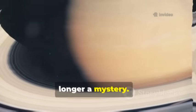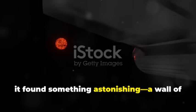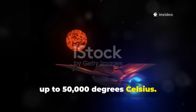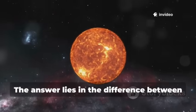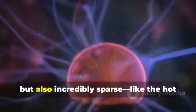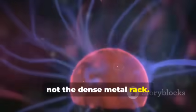As Voyager 1 neared the heliopause, it found something astonishing. A wall of superheated plasma, up to 50,000 degrees Celsius. How did the spacecraft survive? The answer lies in the difference between temperature and heat. The plasma was extremely hot but also incredibly sparse, like the hot air in an oven, not the dense metal rack.